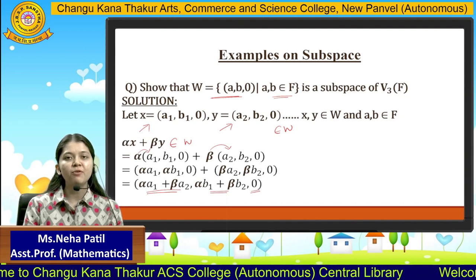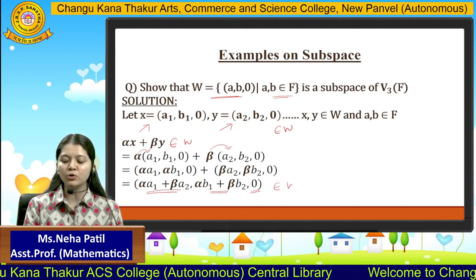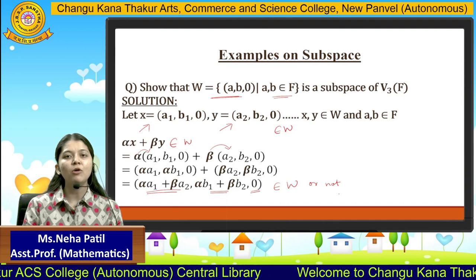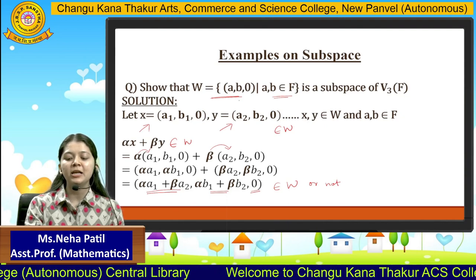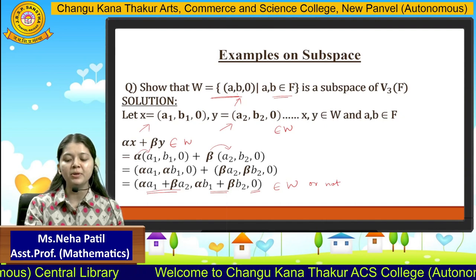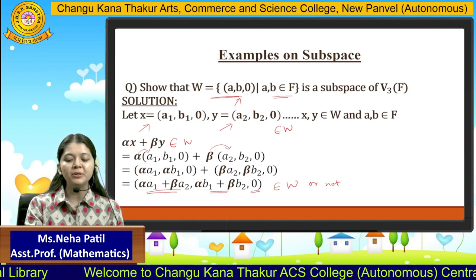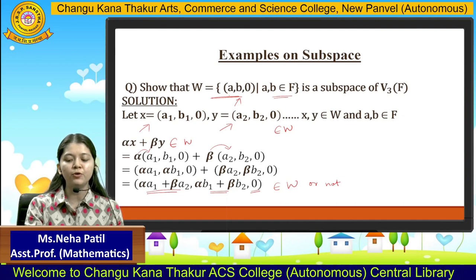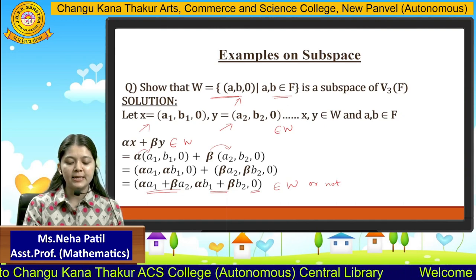Now we check whether this final resultant addition belongs to W or not. Elements belonging to W are of the form (a, b, 0), where the third coordinate must be strictly 0 and the first two must be scalars belonging to the field F.